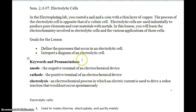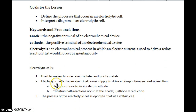I added to the notes: electrolytic cells are used to make chlorine, electroplate, and purify metals. Electrolytic cells use an electrical power supply to drive a non-spontaneous redox reaction. Electrons move from anode to cathode. Oxidation half-reactions occur at the anode; the cathode, of course, is reduction. The process of the electrolytic cell is opposite that of the voltaic cell.